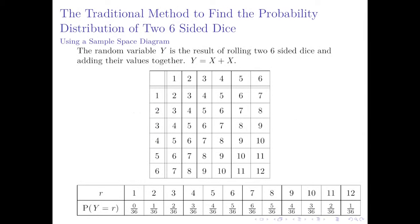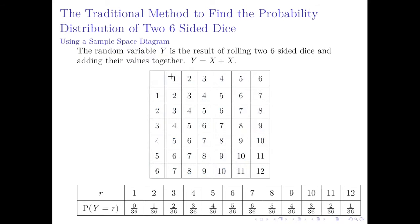So now we'll introduce a random variable y, which is the result of rolling two six-sided dice and adding their values together. The traditional way to work this out might be with a sample space diagram such as this. Here, this represents the result of the first die, and this is the second.